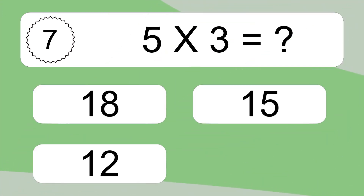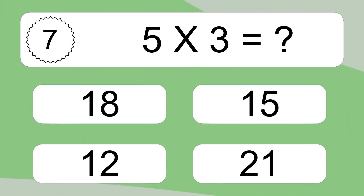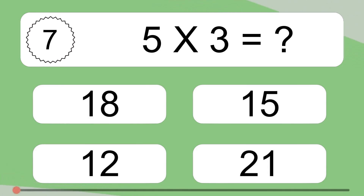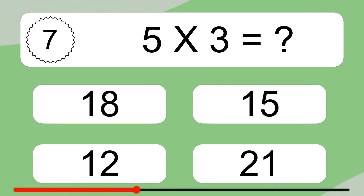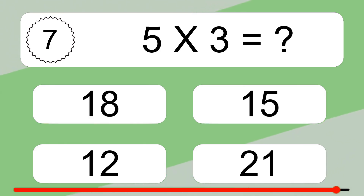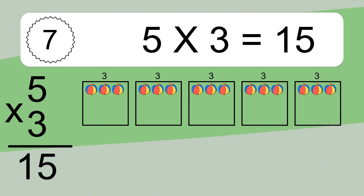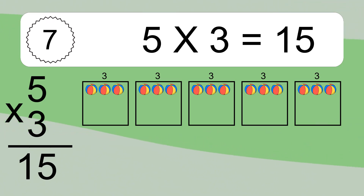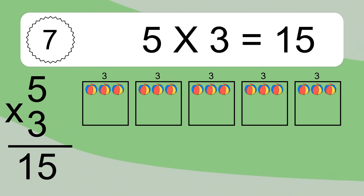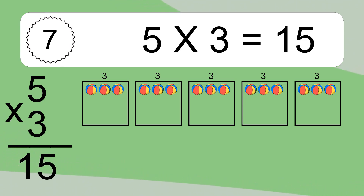5 times 3 equals what? 5 times 3 equals 15. We have 5 boxes and each box has 3 colorful balls inside. If you count all the balls in all the boxes together, you will have 5 times 3 balls. This equals 15 balls.